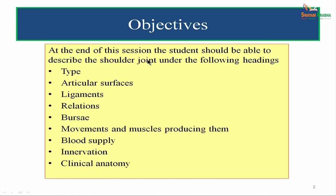The objectives of this session. At the end of this session, the student should be able to describe the shoulder joint under the following headings: Type, Articular Surfaces, Ligaments, Relations, Bursae Around the Joint, Movements and Muscles Producing Them, Blood Supply, Innervation, and Clinical Anatomy.